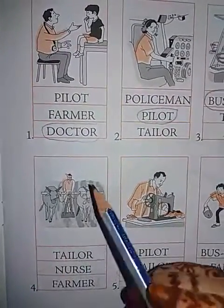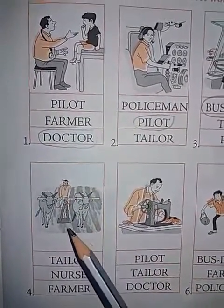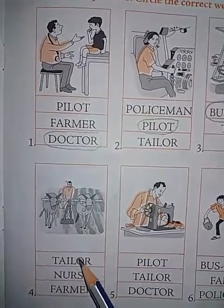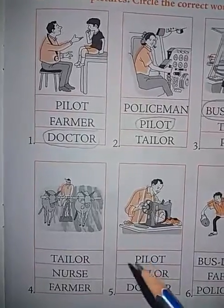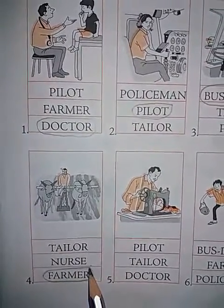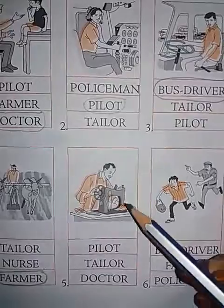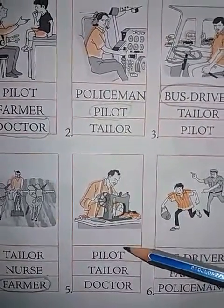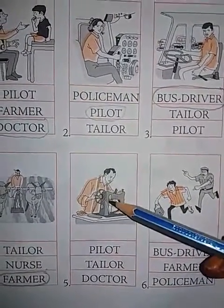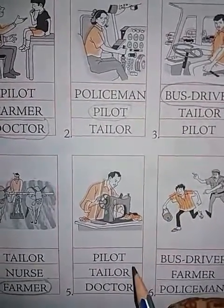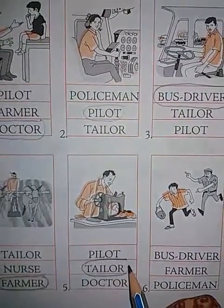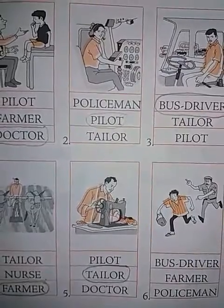Next, let us see the fourth one. What is this man doing? Can you guess? Is he tailor, nurse or farmer? Yes, very good. He is a farmer. He works in a field. Next, who is he? Is he pilot, tailor or doctor? The one who stitches the clothes is called tailor — tailor stitches the clothes. Say the spelling of tailor: T-A-I-L-O-R. Tailor. Very good.